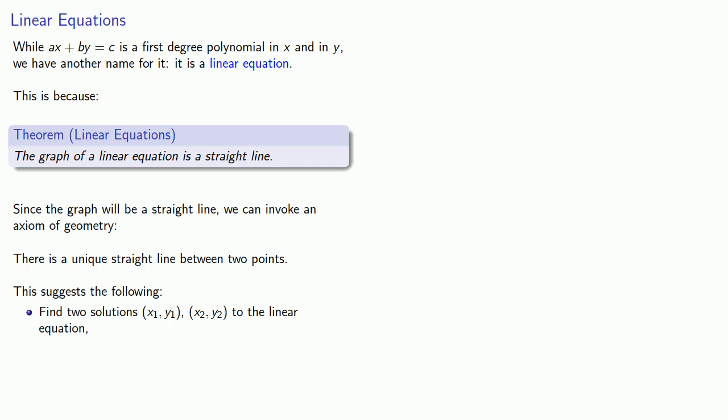First, we'll find two solutions, (x1, y1) and (x2, y2), to the linear equation. Since these correspond to points, we'll graph these points. And then, because there is a unique straight line between the two points, we'll draw the line through the points.